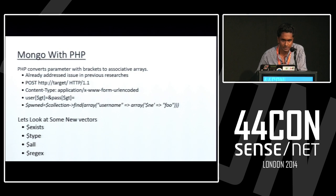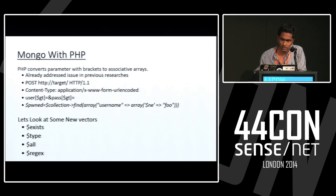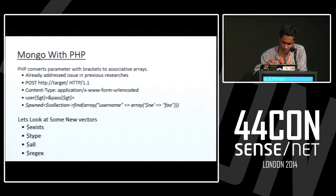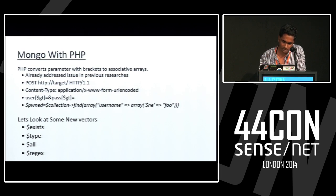Mongo with PHP: PHP converts parameters with brackets to associative arrays. For example, user[$gt] means greater-than, and PHP converts the brackets to associative arrays. What happens is that as soon as you give a parameter within an associative array, it gets converted. So here username=array($ne => foo) — as soon as you give the $ne command and specify the foo user, it checks within the database whether any user named foo exists. Since it's $ne (not equal), it checks whether foo does not exist and returns true, retrieving all users which are not foo.